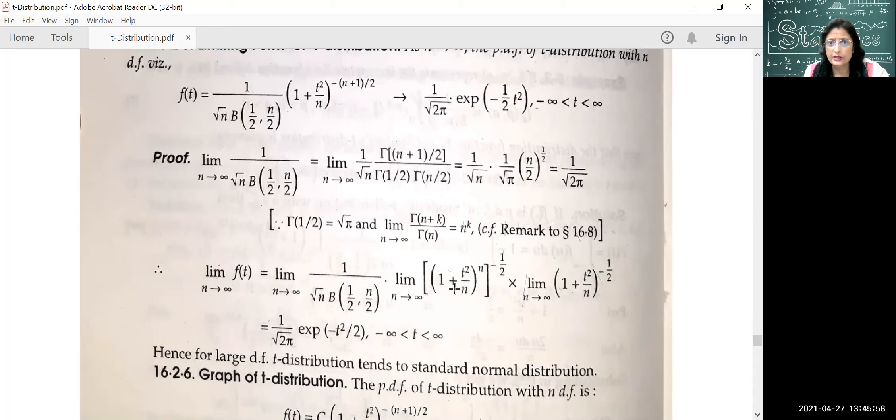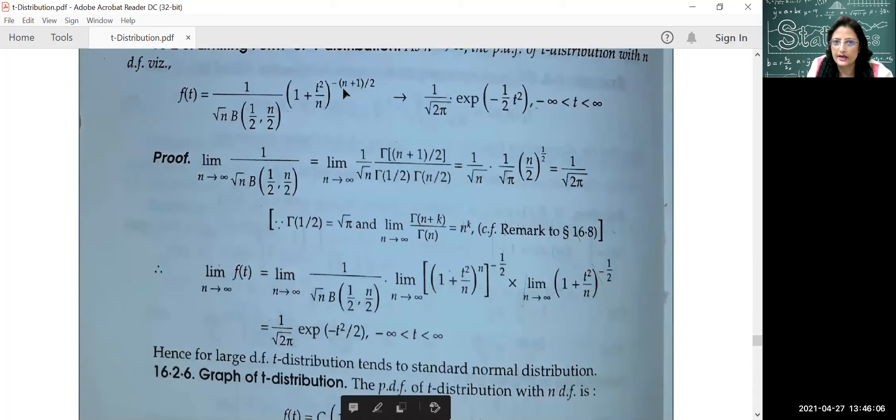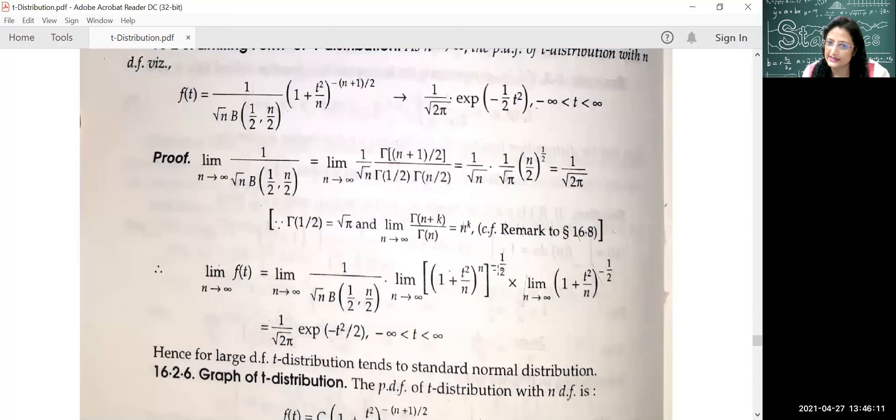One is 1 plus t-square by n minus n by 2, into 1 plus t-square by n minus 1 by 2. In two parts, you can see this: minus n by 2 minus 1 by 2. We have split it in two parts. And here we have added minus 1 by 2.